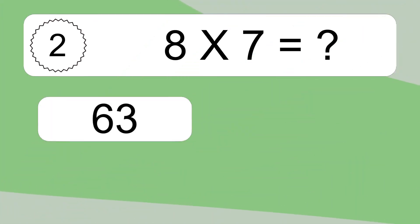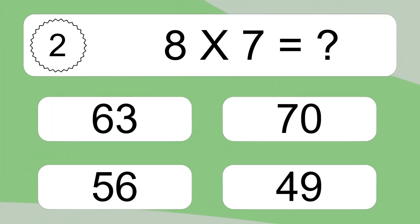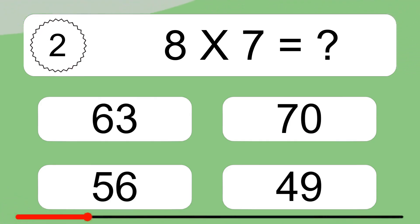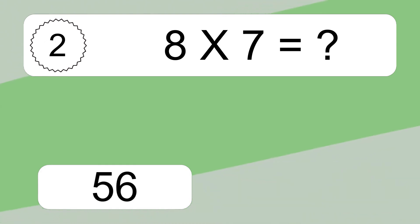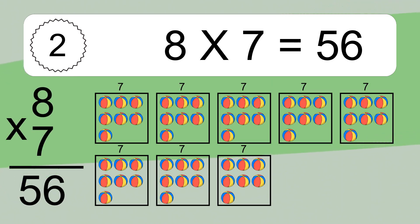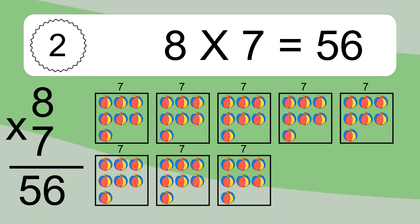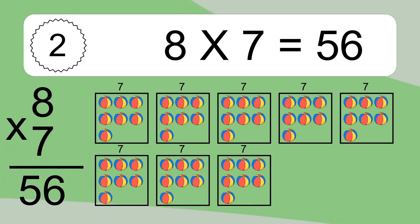8 times 7 equals what? 8 times 7 equals 56. We have 8 boxes and each box has 7 colorful balls inside. If you count all the balls in all the boxes together, you will have 8 times 7 balls. This equals 56 balls.